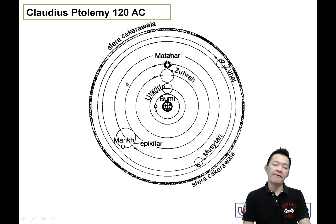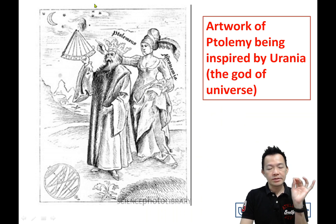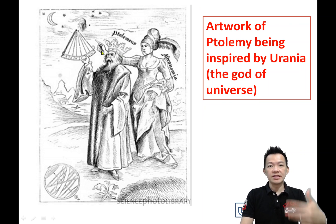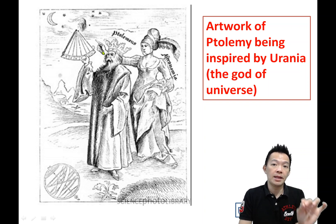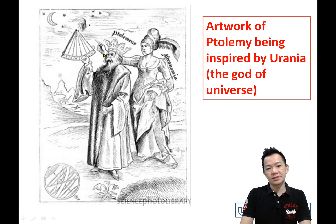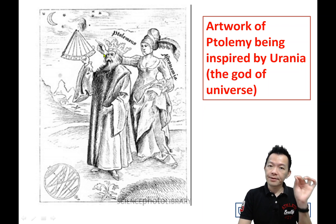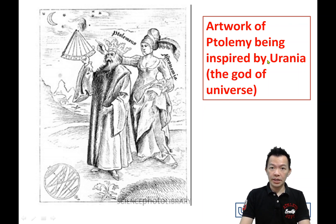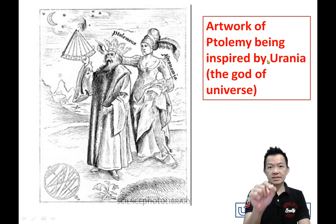Where did this theory come from — from science, mathematics, calculation? Maybe not. Perhaps it came from a dream when the god of the universe told Ptolemy that we are the center. But actually it was researched — that's just a joke. This wrong theory was believed by humans for almost 1,500 years. The Earth is the center of the solar system — 地心说 — was believed for 1,500 years.